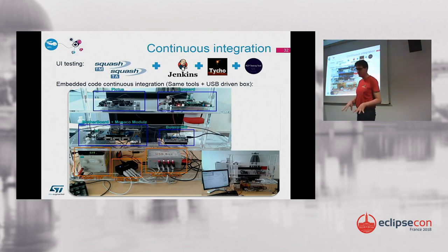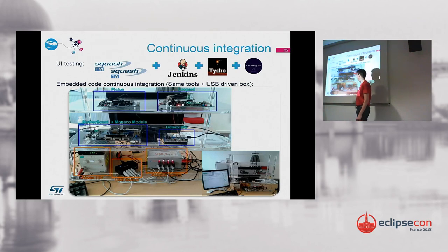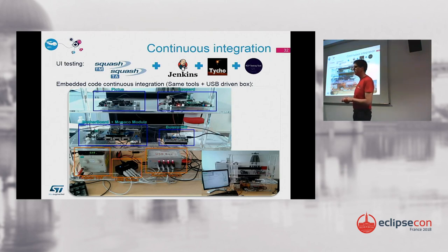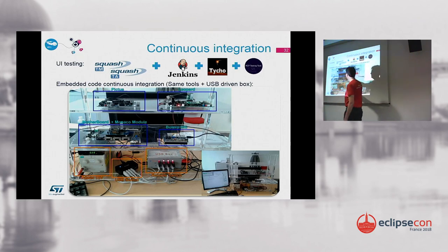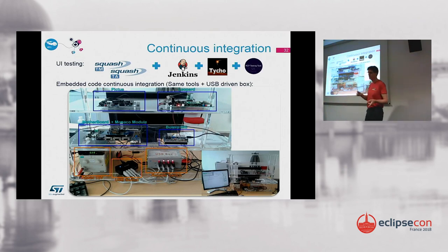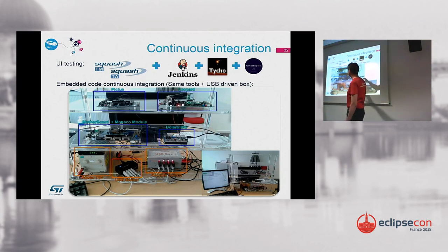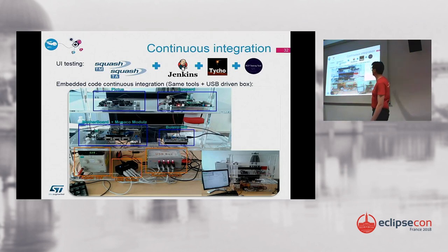For testing the embedded part of the code, we use a custom in-house box that we designed to plug into Jenkins jobs in order to test one platform or another. From this box we can switch on and off the different platforms, push the code inside the controller, get the result of the test, and inject it back into the Squash TM results.